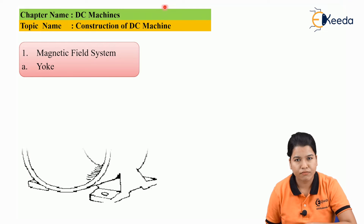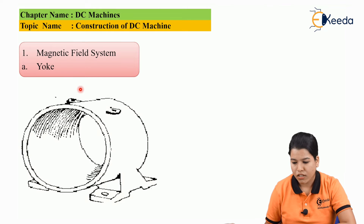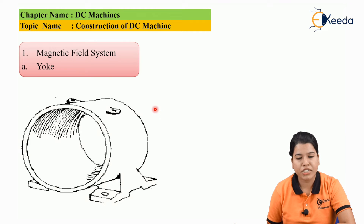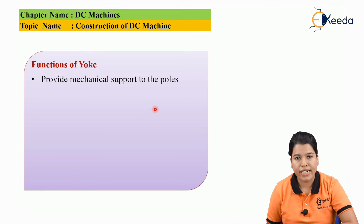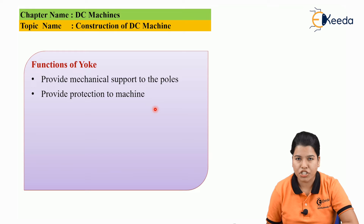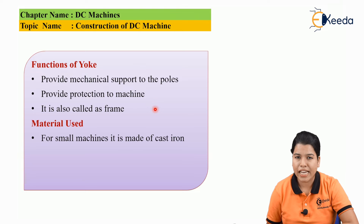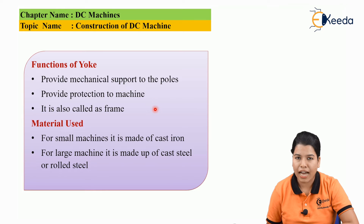The first part is the yoke. Yoke is basically a hollow cylinder which covers the outer portion of the DC machine. It performs the following functions: first, it provides mechanical support; second, it protects the machine; and third, it is also called as frame. In case of small machines it is made up of cast iron, and in case of large machines it is made up of cast steel or rolled steel.